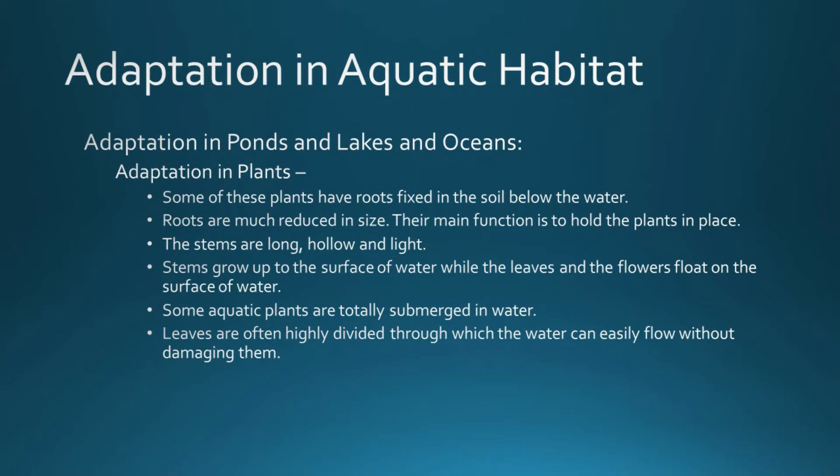Some plants have reduced roots whose main function is to hold the plant in place, like water hyacinth which is floating — the stems are long, hollow and light. In some aquatic plants like Lotus, the stem grows up to the surface of water while the leaves and flowers float on the surface. Some aquatic plants are totally submerged in water. In these submerged plants the leaves are often highly divided, through which water can easily flow without damaging the plant.